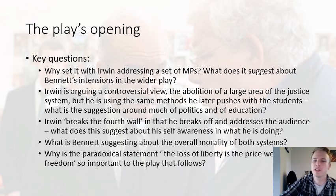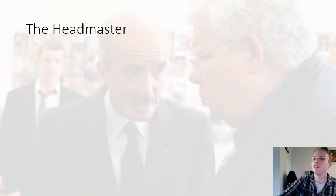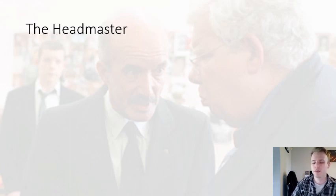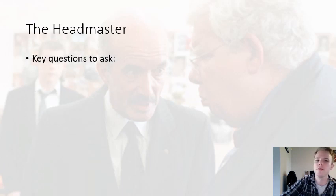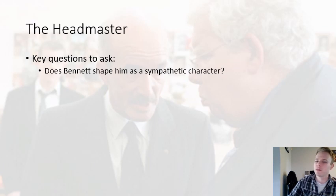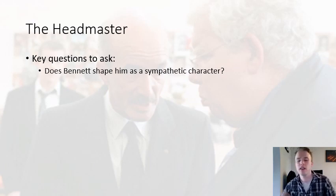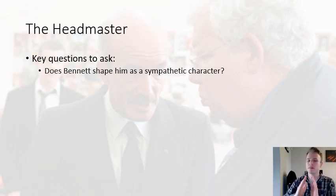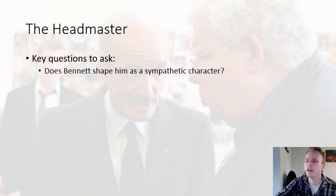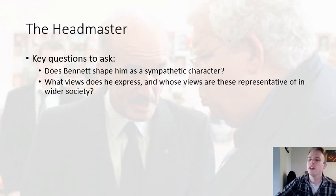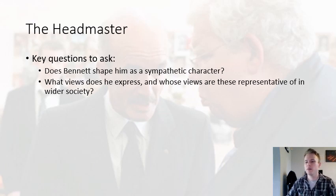Now we'll move on to the headmaster. As with many characters, there's an overall intention — so key questions to ask about the headmaster wherever you see him: does Bennett shape him as a sympathetic character? Bennett could in theory be a Tory who really likes the educational changes — in which case he'd make the headmaster sympathetic — but he doesn't. This suggests Bennett's point of view. Then think about how exactly he makes him unsympathetic, which exact views are given to that character, where they fit in wider society, and whose views are they.